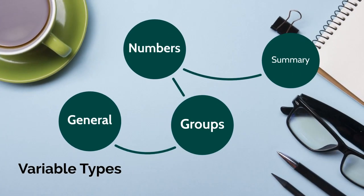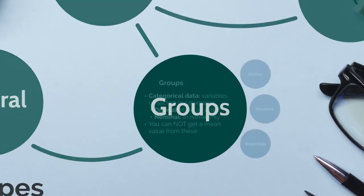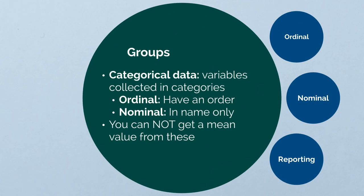So what types of variables do we have? We have group variables, also called categorical variables or character variables. These are collected in categories. There are two types of categorical variables: ordinal categorical and nominal categorical. Ordinal, as the name implies, have an inherent order to them. Nominal are in name only — there is no order to the responses.